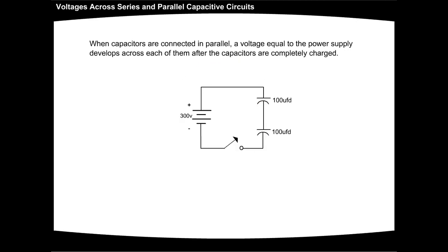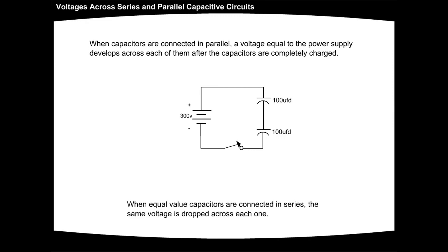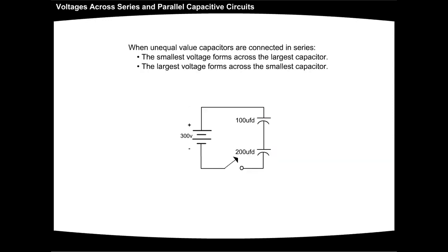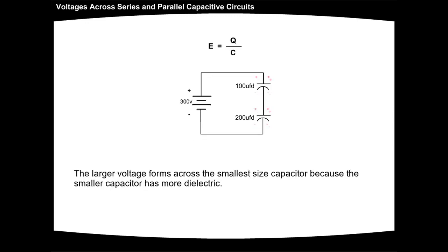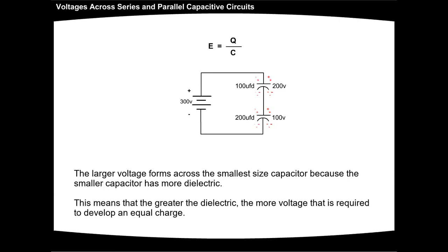When capacitors are connected in parallel, a voltage equal to the power supply develops across each of them after the capacitors are completely charged. When equal value capacitors are connected in series, the same voltage is dropped across each one. When unequal value capacitors are connected in series, the smallest voltage forms across the largest capacitor, and the largest voltage forms across the smallest capacitor. The larger voltage forms across the smallest size capacitor because the smaller capacitor has more dielectric, meaning the greater the dielectric, the more voltage that is required to develop an equal charge.